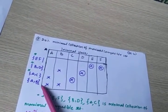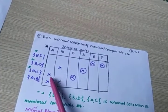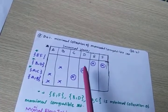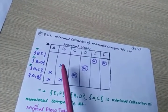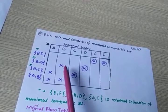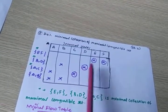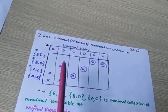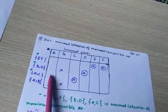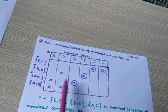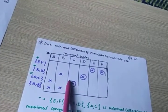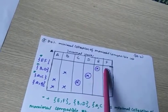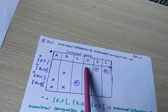Now consider the columns. Check each column: if there is a single cross mark in a column, circle that corresponding column. This is similar to the prime implicant method — finding the essential prime implicants. If a column has two cross marks, don't circle it. If a column has a single cross mark, circle it.